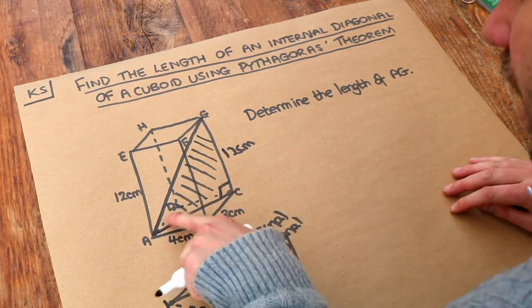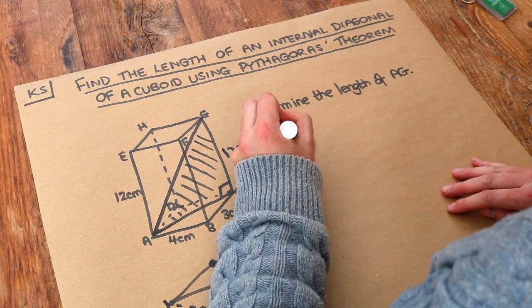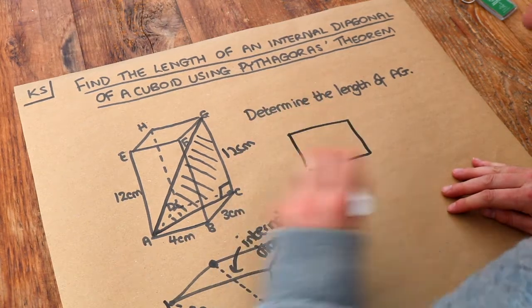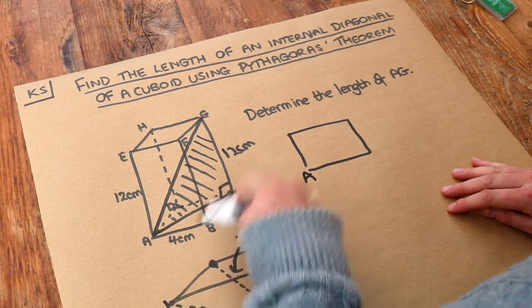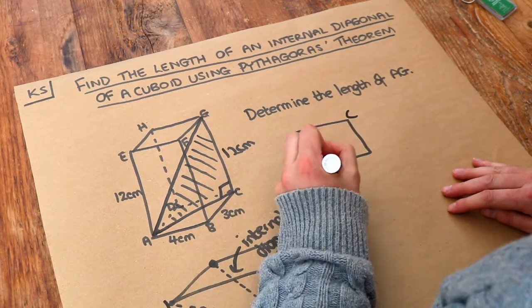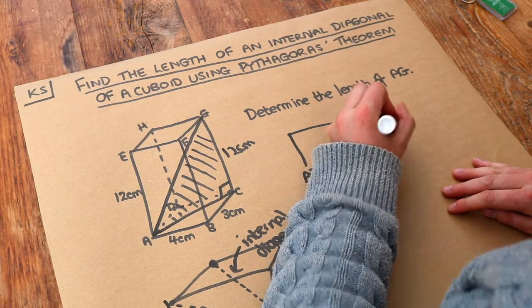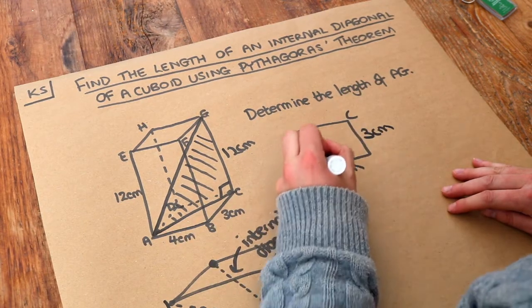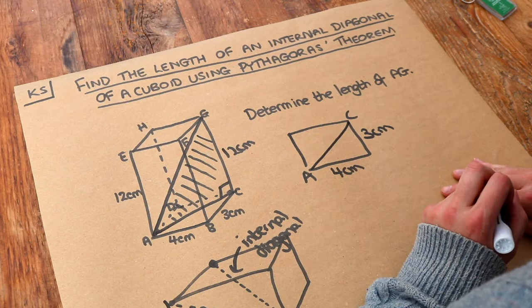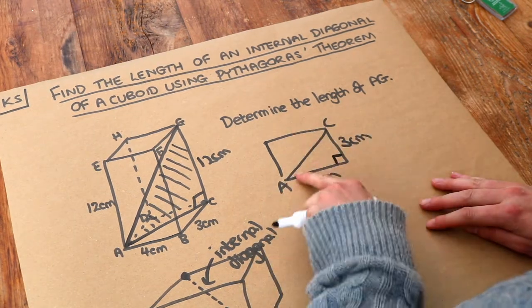But actually can you see on this bottom rectangle, if I draw the rectangle separately, where you've got A here, C here, we've got that 4 centimetres here, we've got that 3 centimetres here, and you can see AC goes across the diagonal of that rectangle. We can use Pythagoras theorem to find AC.